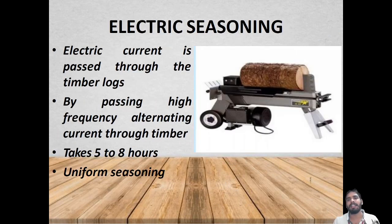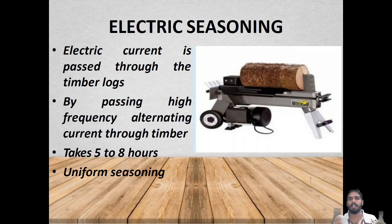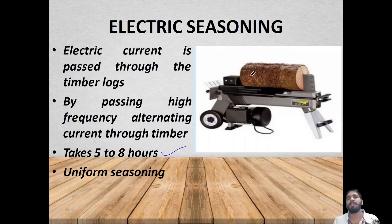Then comes electrical seasoning. A positive electrode is kept on one side and a negative electrode on the other, connected to a battery. Charge is applied at both ends — negative and positive — so electricity is passed through the timber. The moisture dries off and it may take around 5 to 8 hours. This is also a uniform seasoning method.